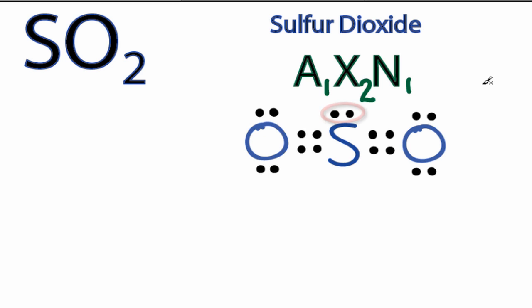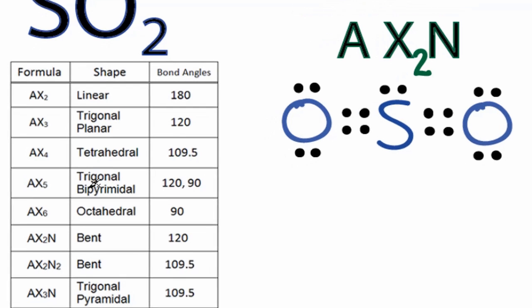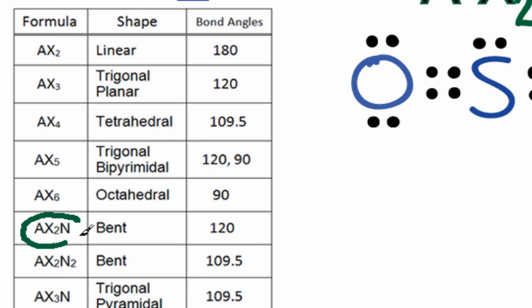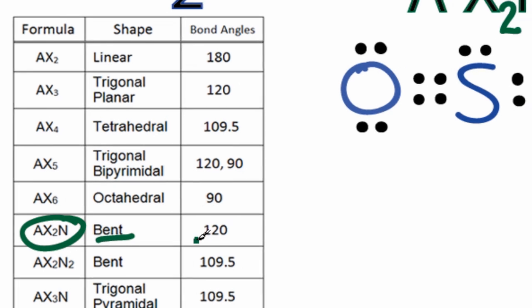We'll ignore the ones, and we can see that we have AX2N. We can remember that this is a bent molecule, or we can look it up on a table. Here we can see AX2N is bent and has a bond angle of 120 degrees.